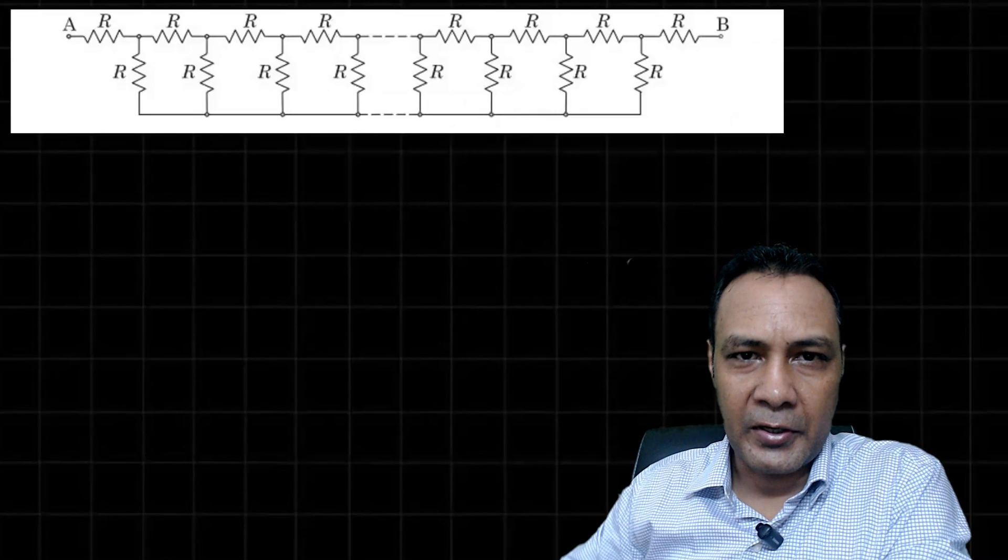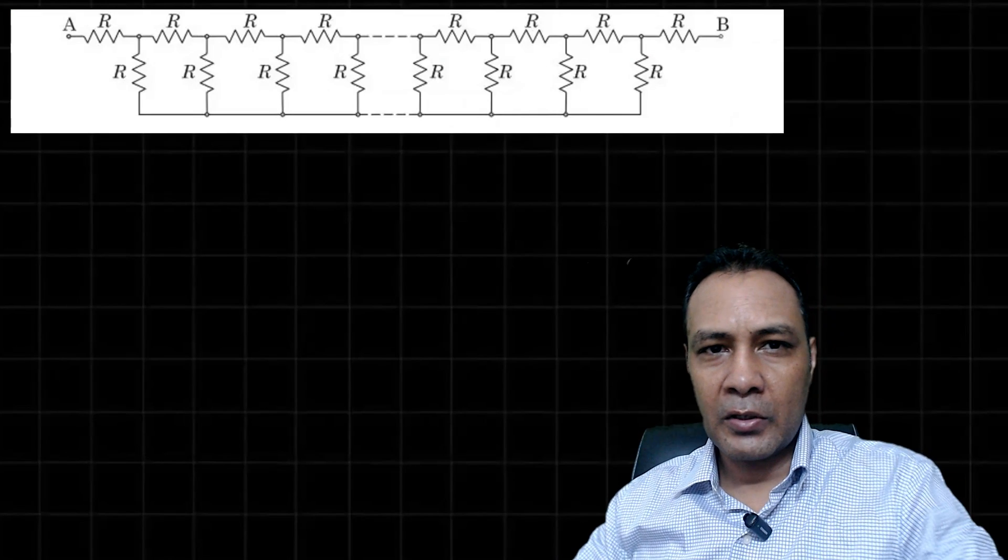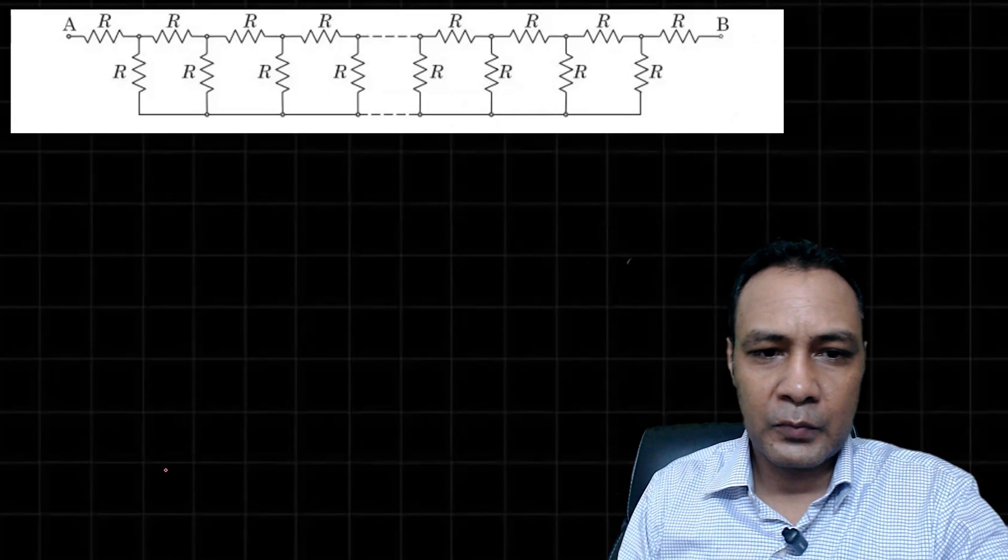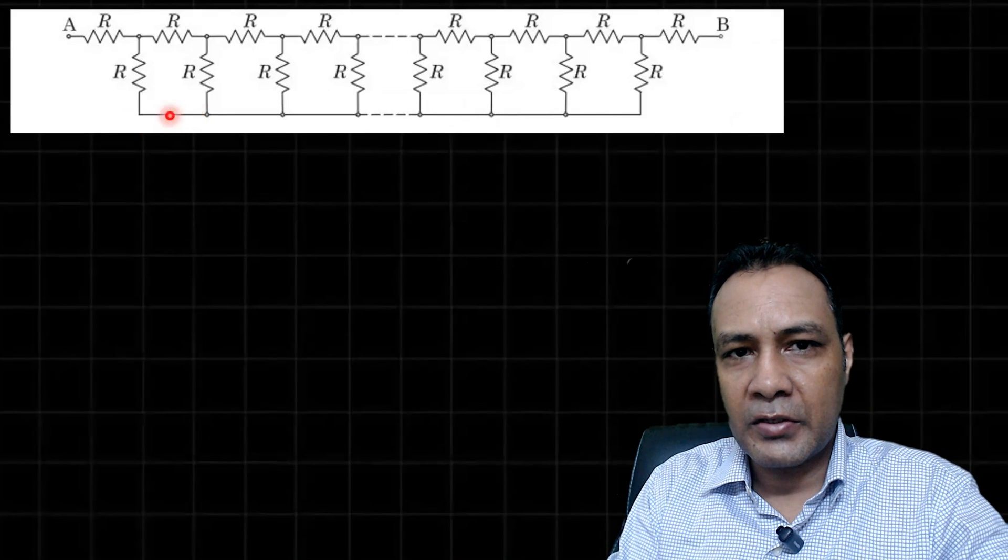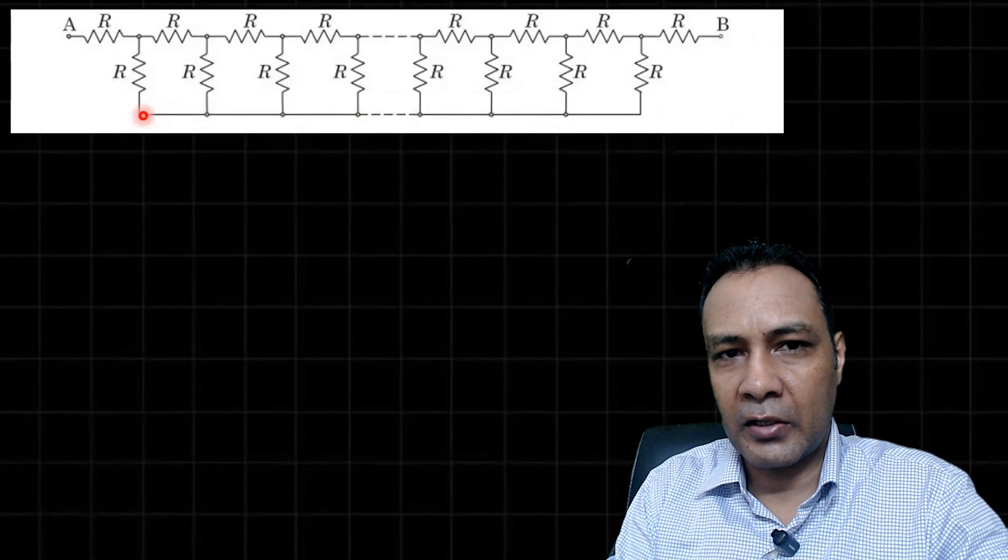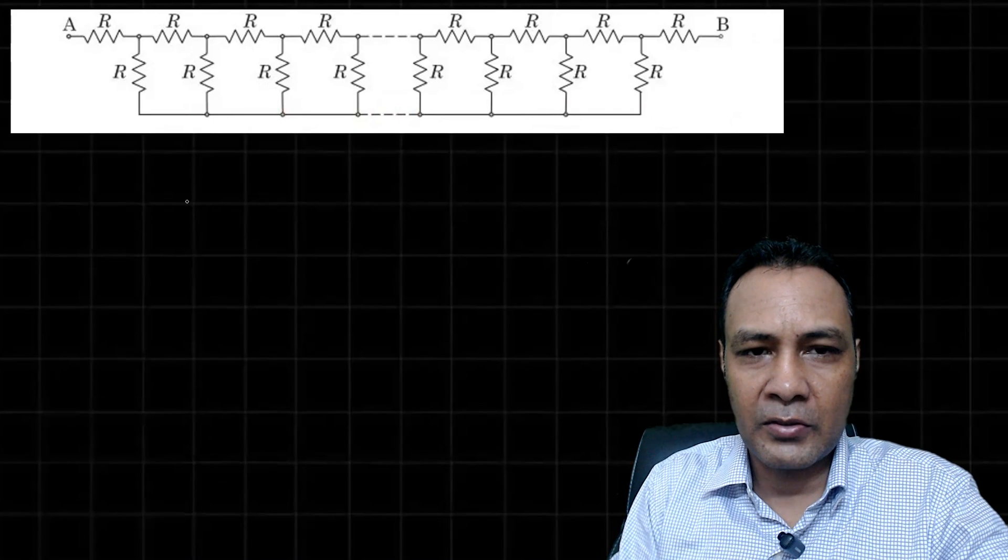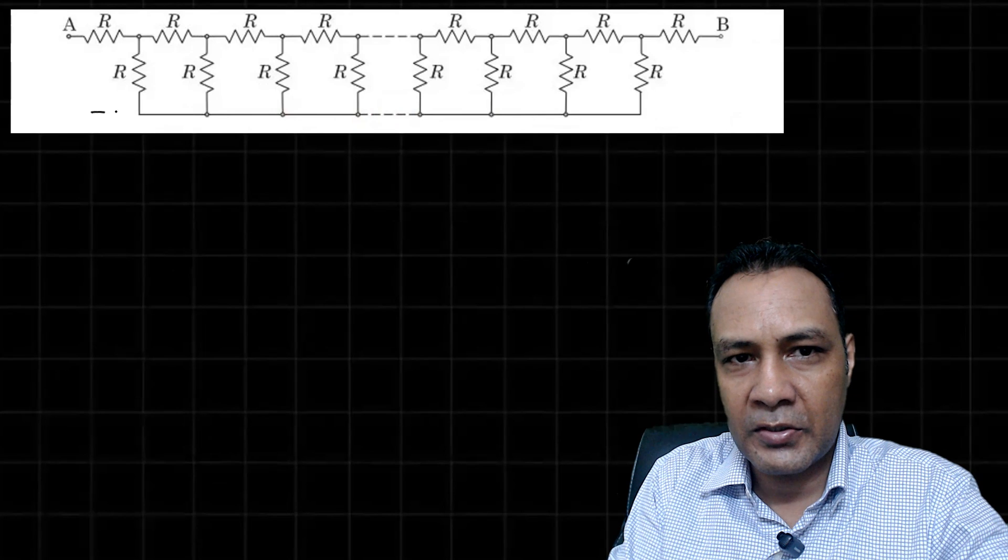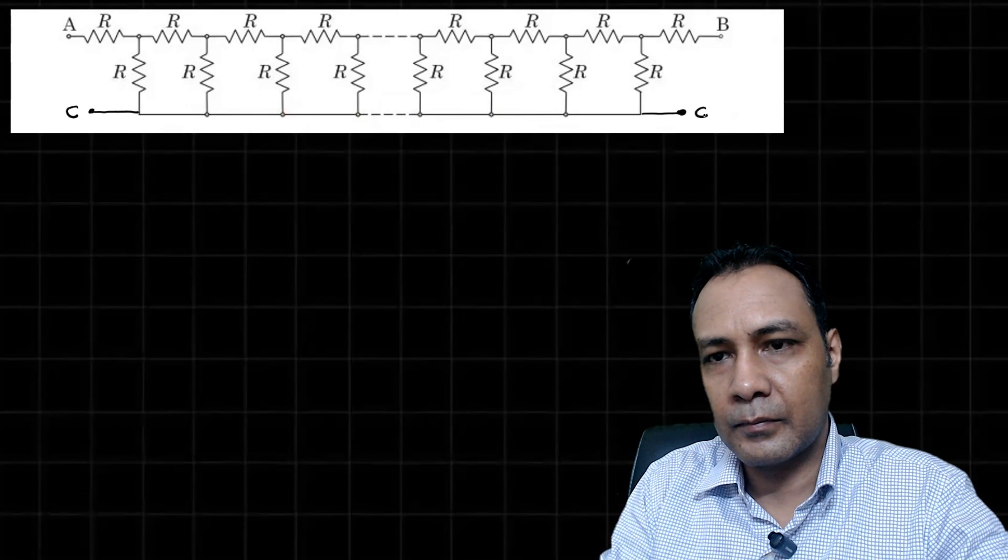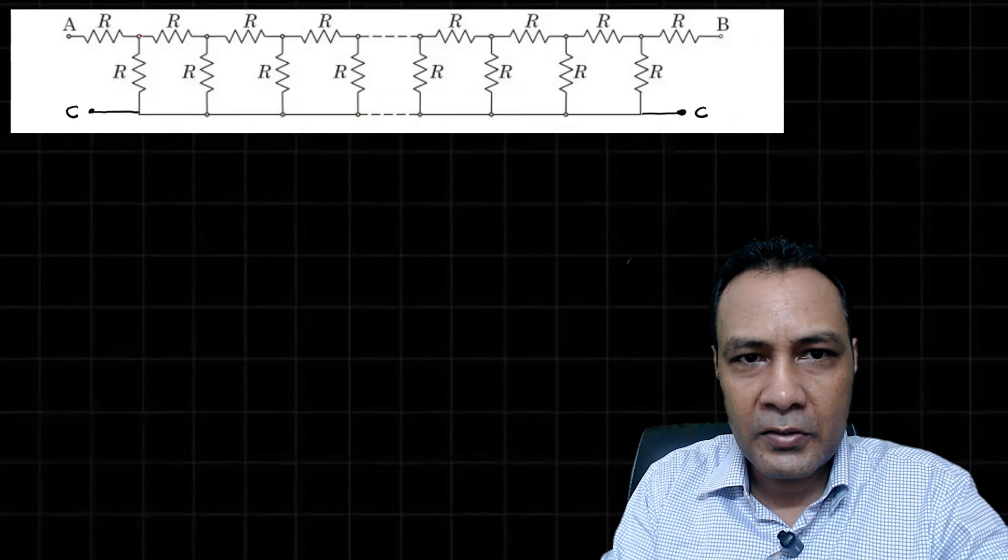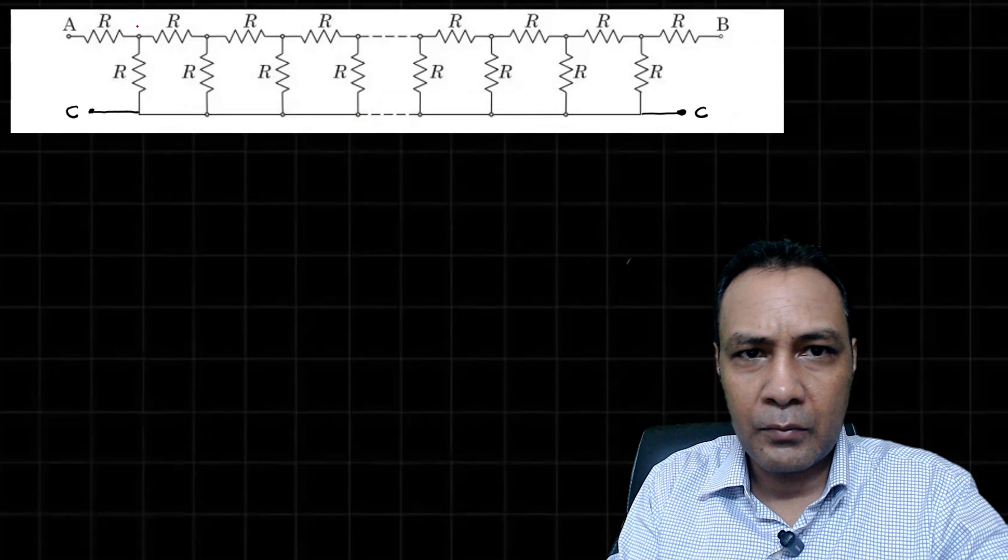Let me name the different nodes. All these points are at the same potential, so I can give all these nodes just one single name. Let me name that, suppose these are all the same points as C, and this is A, B.